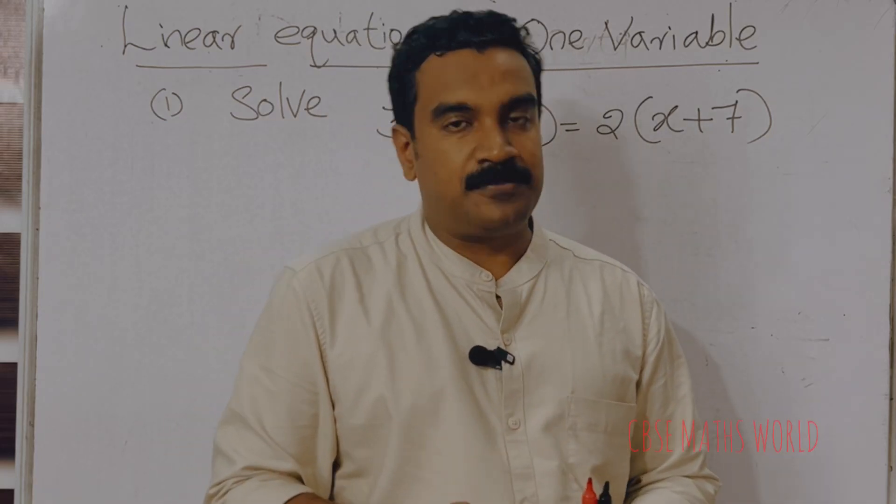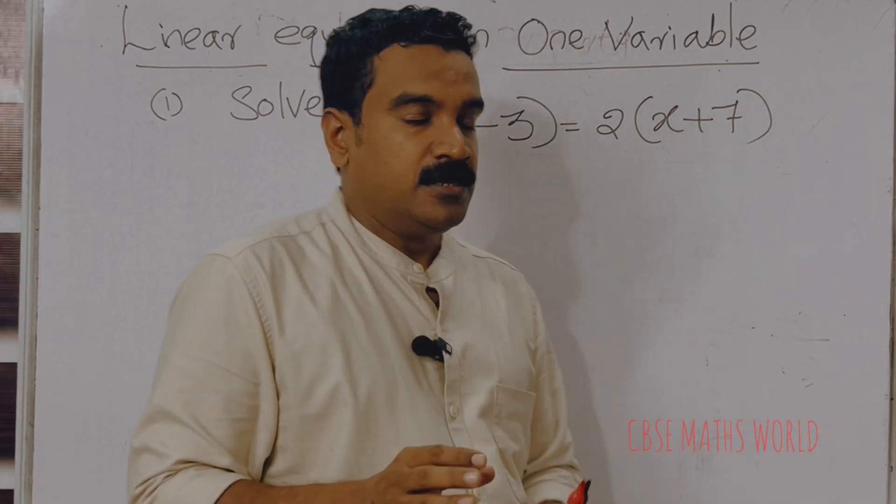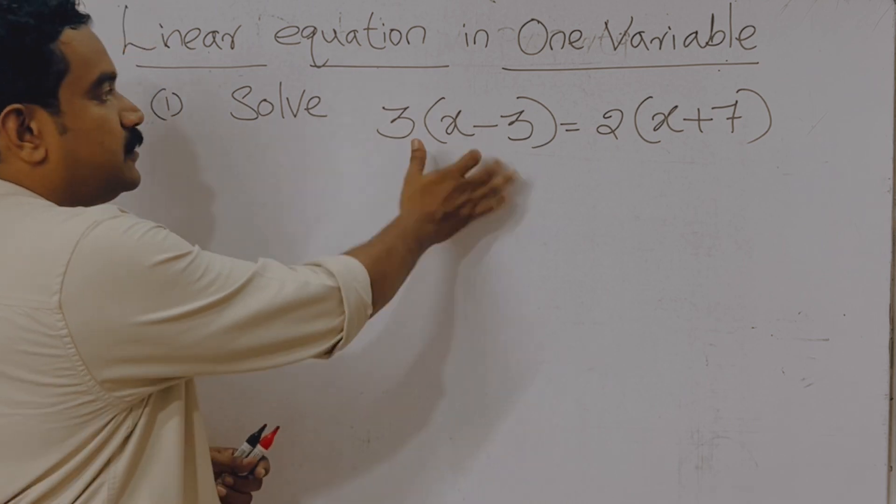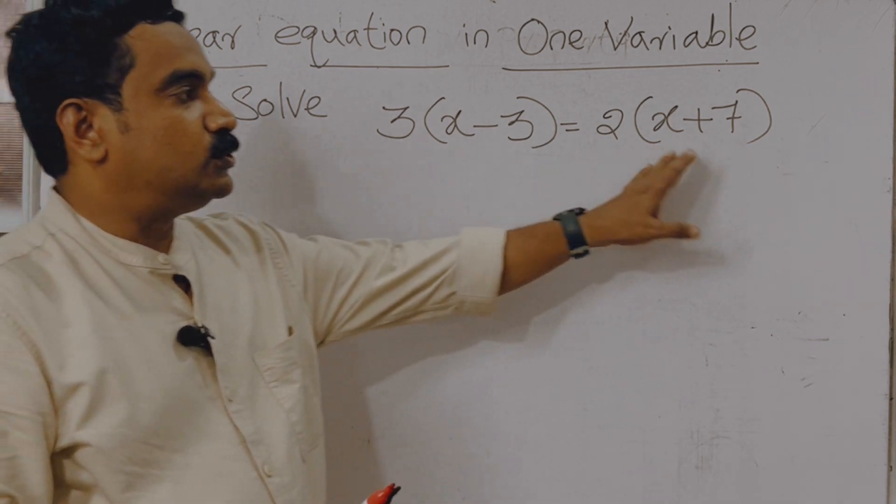Hello, let us discuss one question from the chapter linear equation in one variable. The question is solve 3 into x minus 3 is equal to 2 into x plus 7.